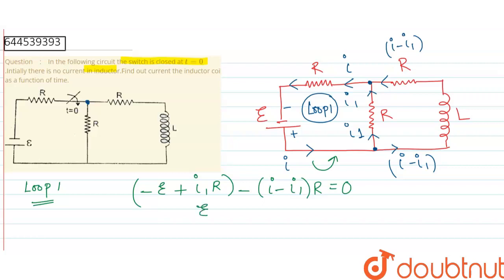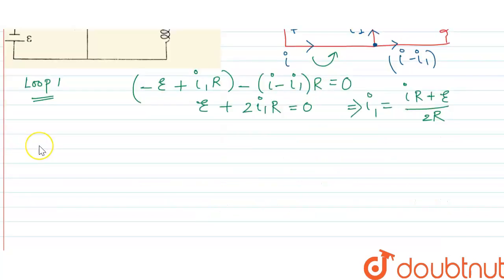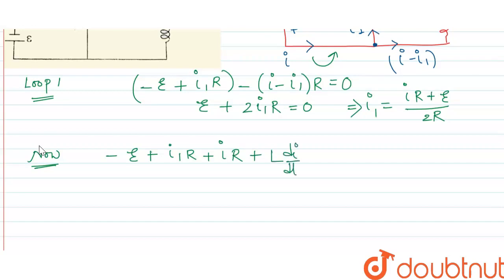From this Loop 1 equation we can derive that epsilon plus 2·I1·R equals a simplified expression, and for Loop 2 the equation includes the inductor term L·di/dt equal to zero.